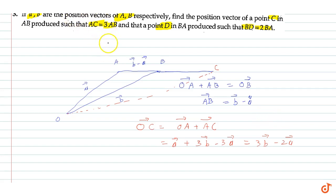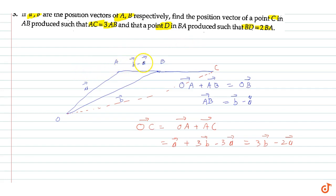For the second part, we have point D where BD is equal to 2 times BA. Since AB vector is B minus A, the BA vector is A minus B.